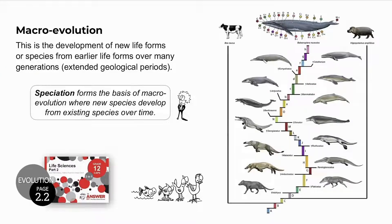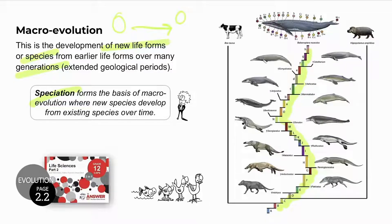Macroevolution is big evolution. It refers to the development of new life forms or species from earlier species over generations, so speciation forms the basis of macroevolution. Macroevolution is not always directly observable — it is sometimes observed in the fossil record, where long time periods are required for favourable mutations and natural selection. Examples include the development of unicellular organisms to multicellular organisms, from reptiles to birds, or the evolution of whales, cows, and hippos from one common four-legged land-living ancestor.